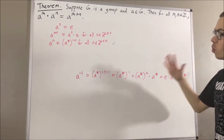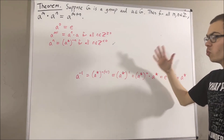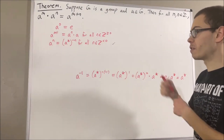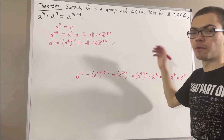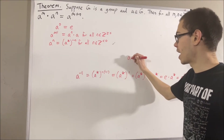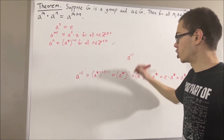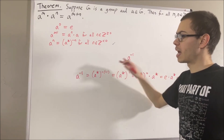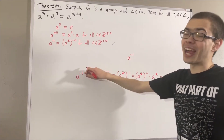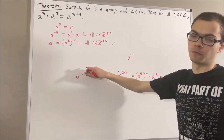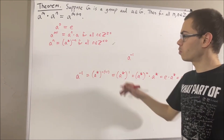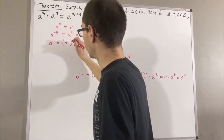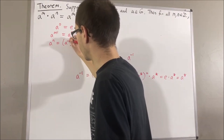So this shows that the inverse of A is equal to A to the power of negative 1. What this tells us is that we don't have to distinguish between the notation we've been using for inverse elements — A with a superscript of negative 1 — it's precisely the same as A with an integer exponent of negative 1. So let's just replace this notation with A to the power of negative 1.